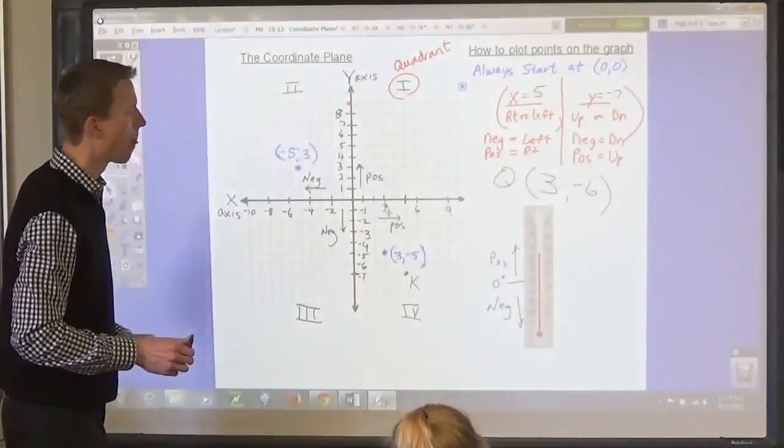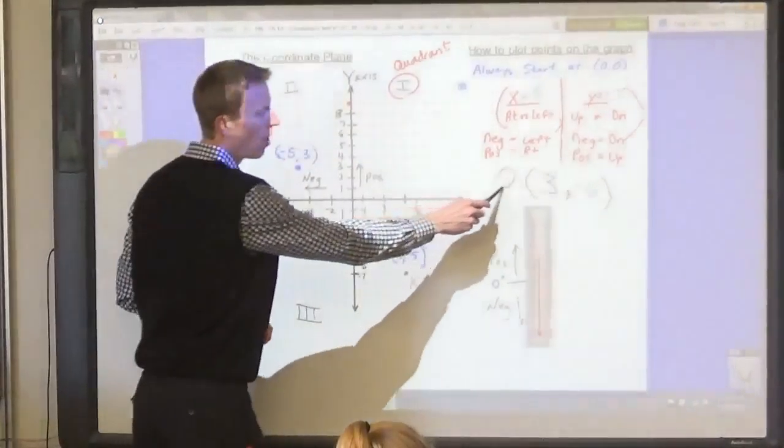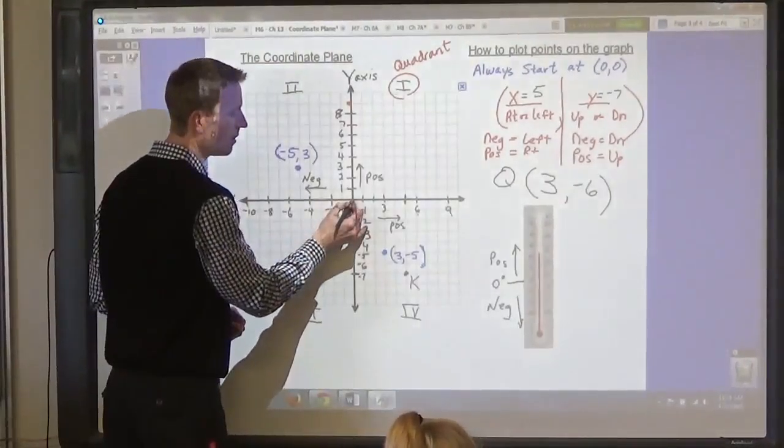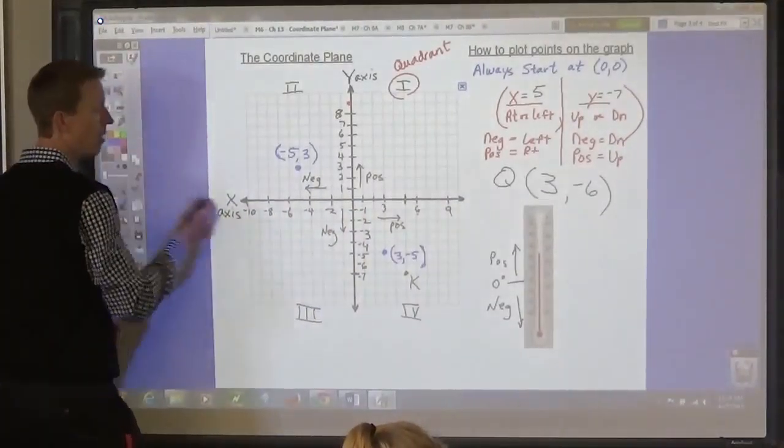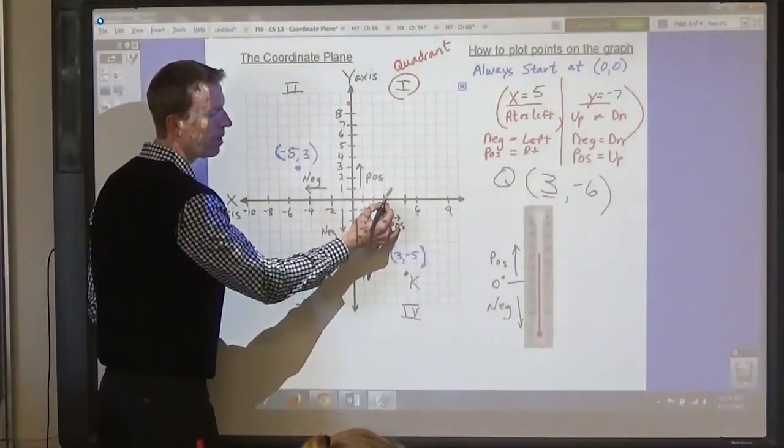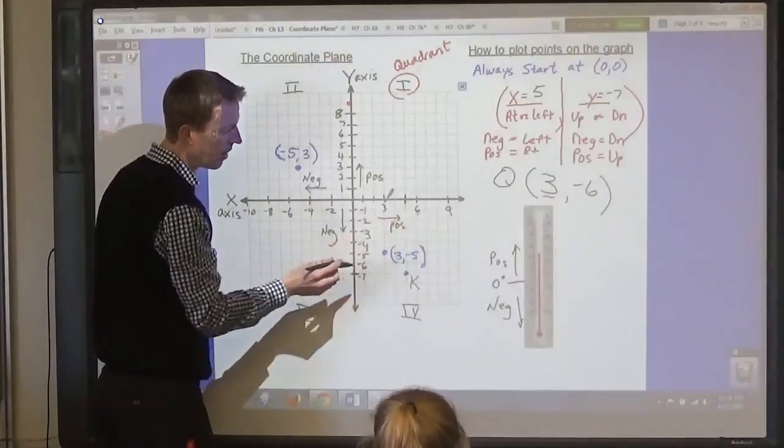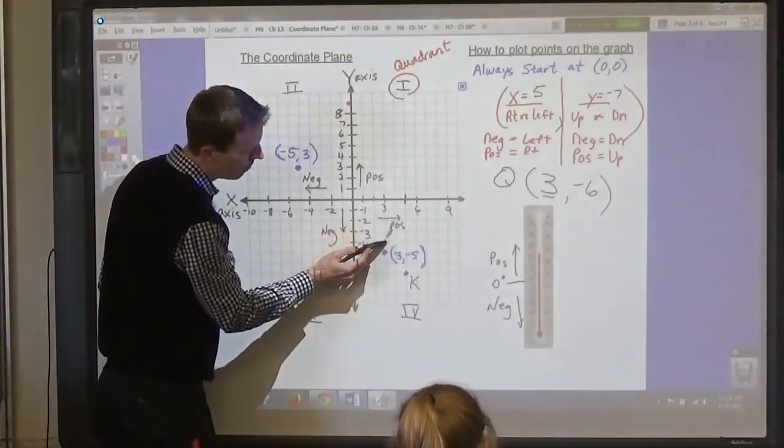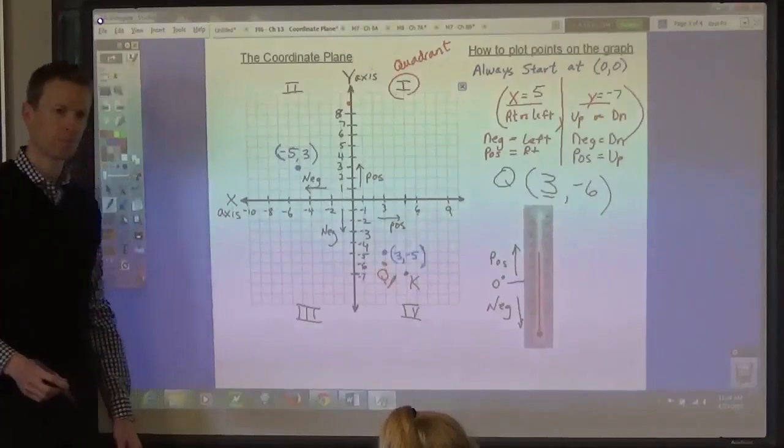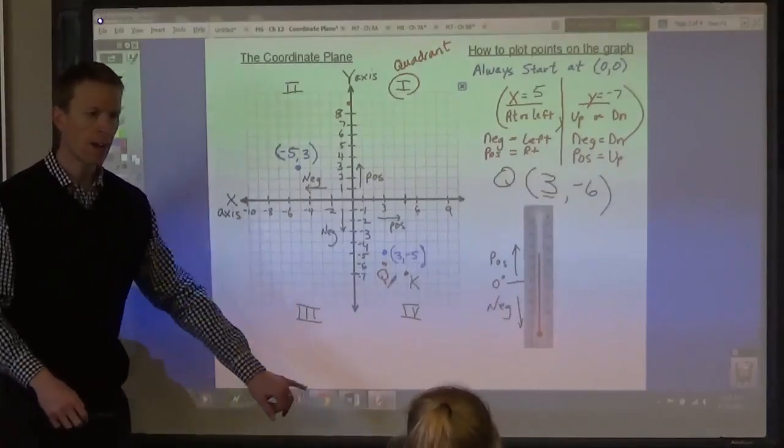In order to use the numbers to go to a point, let's say that we wanted to mark a point on here, point Q, we would use the numbers, start at 0, and go 3 to the right, 1, 2, 3, and then from here, 6 down. Why would we go 6 down? Because it's negative 6. 1, 2, 3, 4, 5, 6. So that point we would mark as point Q.